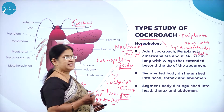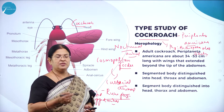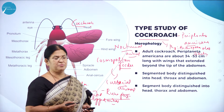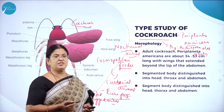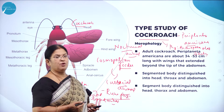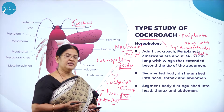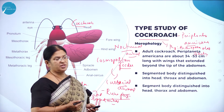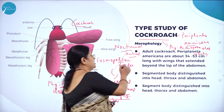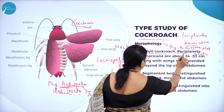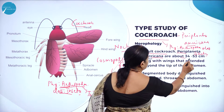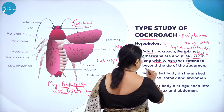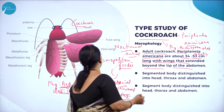Just as we studied the morphological and anatomical features of earthworm, we will now study the morphological features of cockroach — that is, the study of its external features. Adult cockroach, Periplaneta americana, is about 34 to 53 millimeters long with wings that extend beyond the tip of the abdomen.